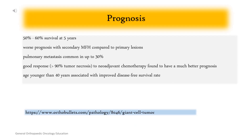Prognosis: 50–60% survival at 5 years, with worse prognosis for secondary MFH compared to primary lesions. Pulmonary metastasis is common in up to 30% of cases. Good response — more than 90% tumor necrosis — to neoadjuvant chemotherapy is associated with a much better prognosis. Age younger than 40 years is associated with improved disease-free survival rate.